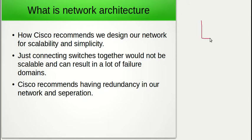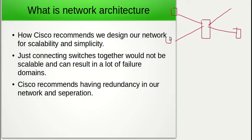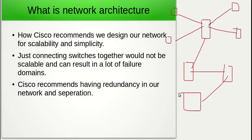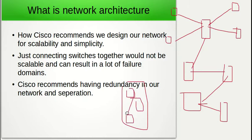When we first open up an office, we're obviously going to have just a single switch because we're just a small business connecting our devices together. As we get more and more people joining our business, we have to have more switches. As we add more switches, we may have to open up another building. The problem with this flat network is that there's only a single connection between each of our devices and there's no redundancy. So if this link fails, essentially one part of the network is cut off from another.